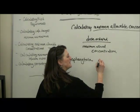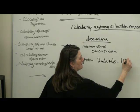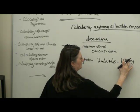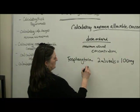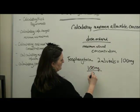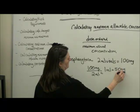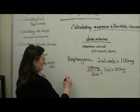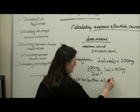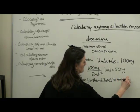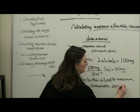Fosphenytoin comes in two milliliter vials, and they are 100 milligrams in a vial. So if there's 100 milligrams in two milliliters, we know that one milliliter is 50 milligrams. But the med reference says must be further diluted to maximum concentration of 25 milligrams per milliliter.